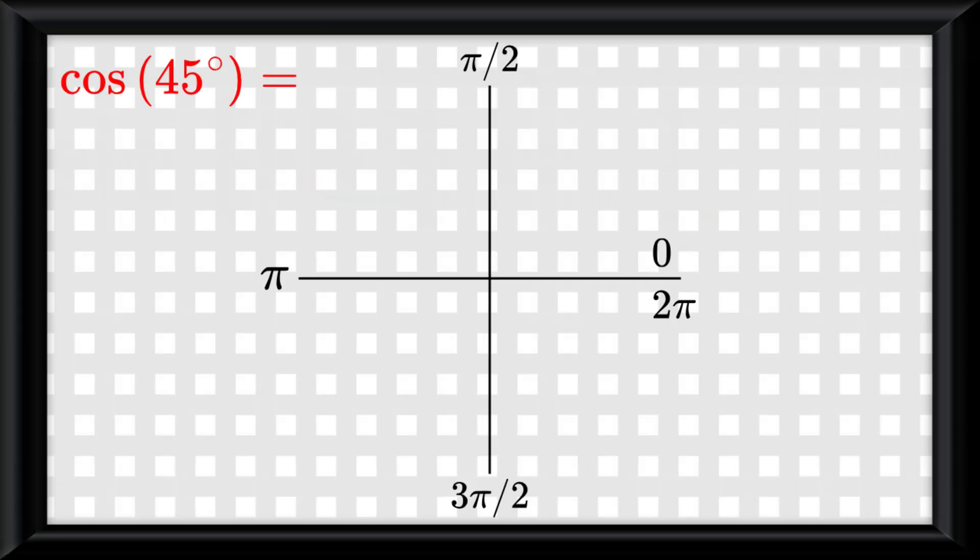And if we had something like cosine of 45 degrees, then we can construct the 45-45-90 triangle, and we know cosine is adjacent over hypotenuse, which in this case is 1 over root 2. Thing is, you can't have a square root in the denominator,